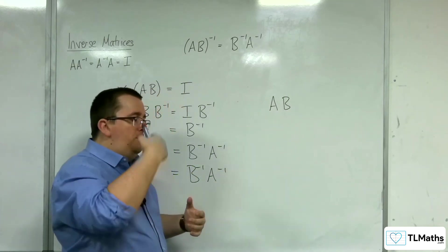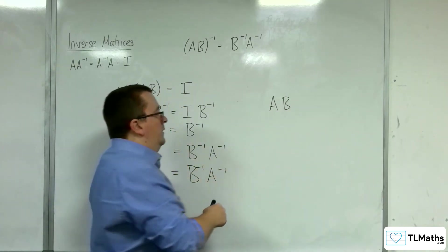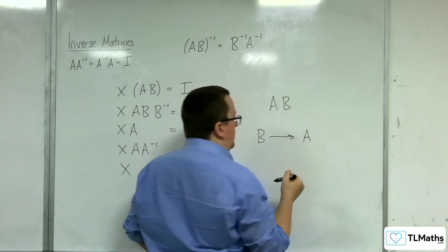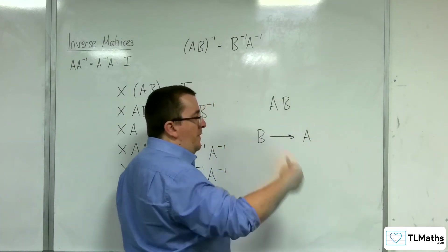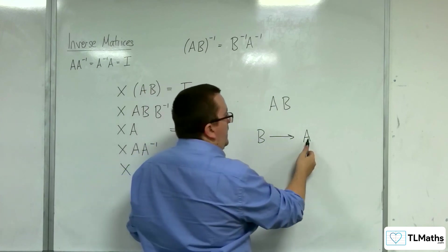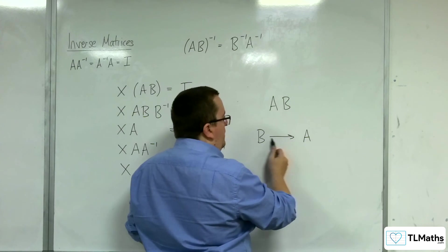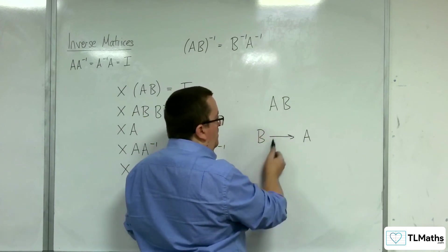So if you do B first, so you've done B, then you do A. In order to reverse the process, I need to untangle what A has done, and then I need to untangle what B has done.